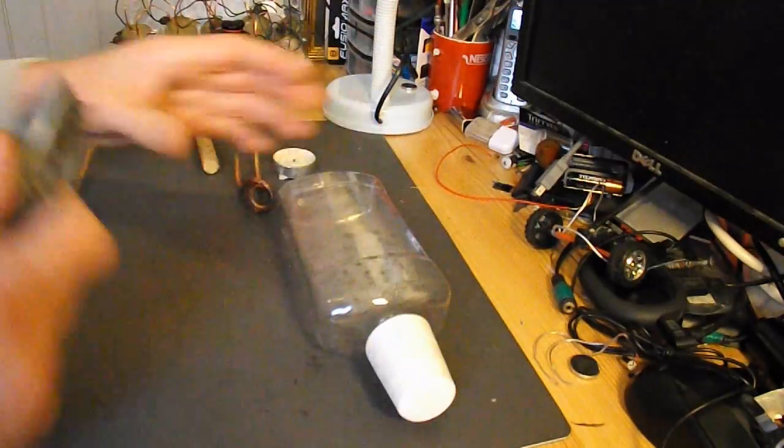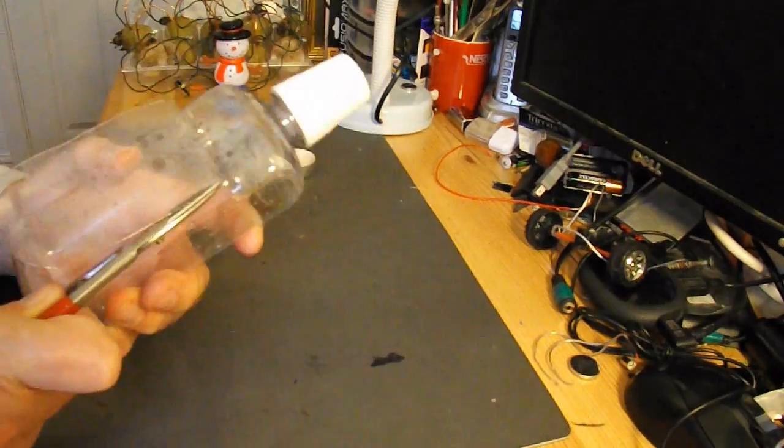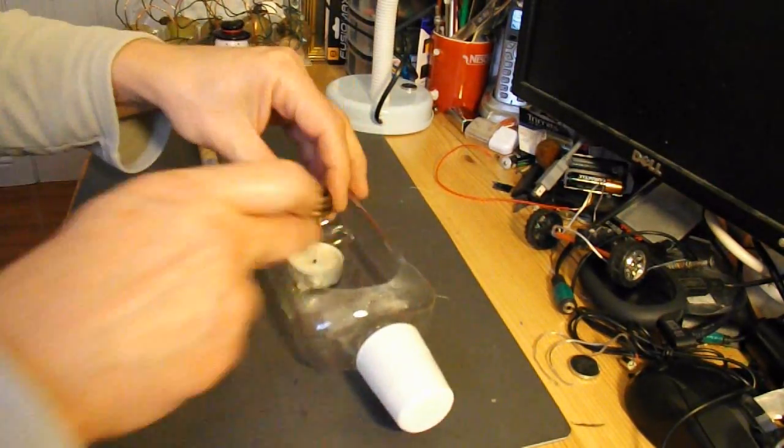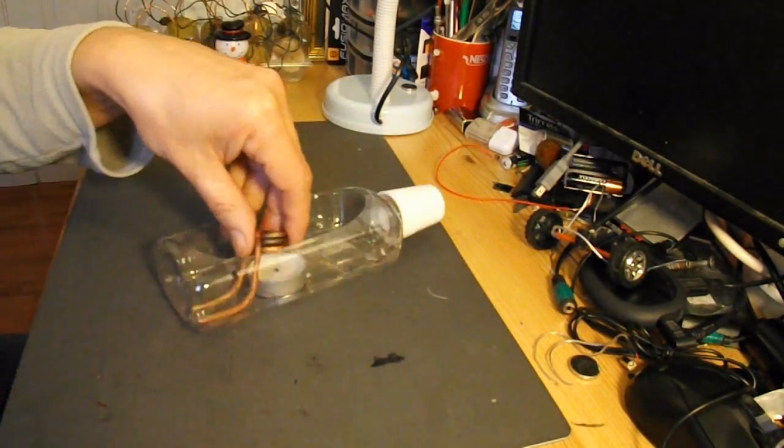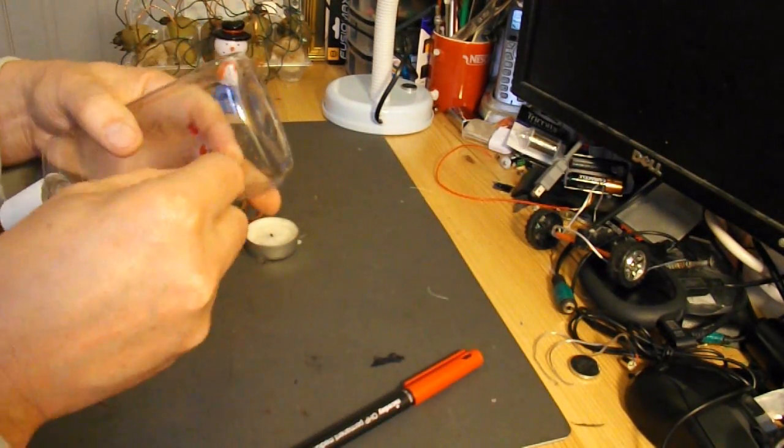Now we need to cut a hole in the top of the boat, the bottle, so we can mount that in there and the tea light in there.